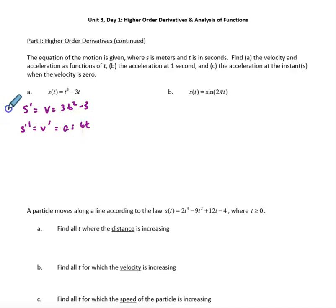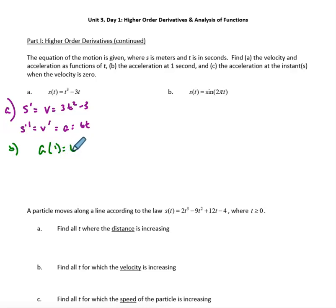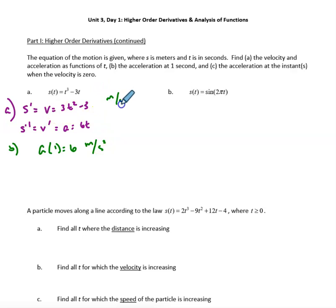Part b asks for the acceleration at one second. Take the acceleration function and plug in time equals 1, giving acceleration equal to 6. We need units here — s is in meters and t is in seconds — so the answer is 6 meters per second squared. For reference, the units of velocity would be meters per second.